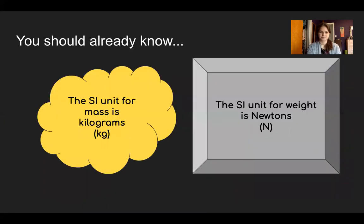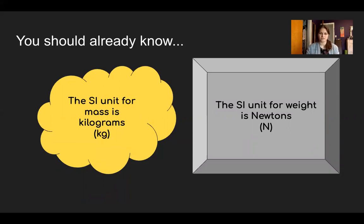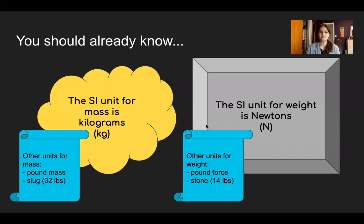The SI unit for mass is the kilogram, and the SI unit for weight is Newtons — which is also the SI unit for force. Weight is just a particular type of force: force due to gravity. Just like a push, pull, friction, or the buoyant force of water are all types of forces, they all use the unit Newtons.